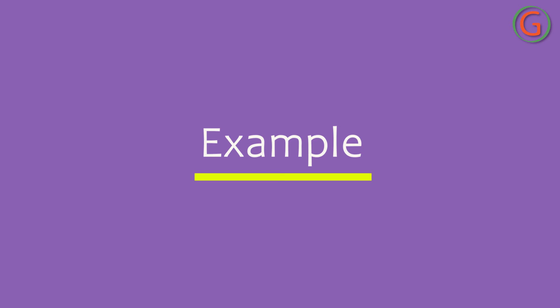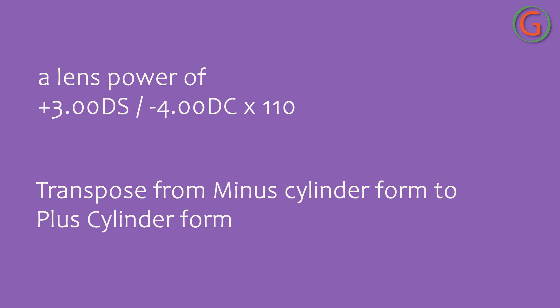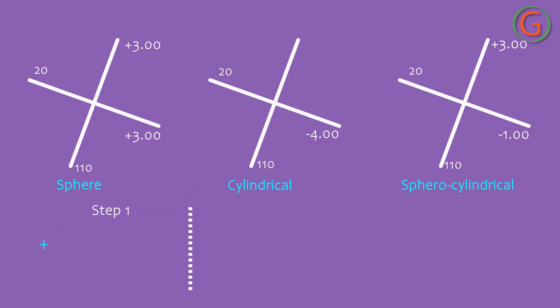Let's take an example. Transpose a lens power of plus 3.00 minus 4.00 at axis 110, from minus cylinder form to plus cylinder form. Step 1: Add the sphere and cylinder values to obtain the new sphere power. Plus 3.00 plus (minus 4.00) is equal to minus 1.00.